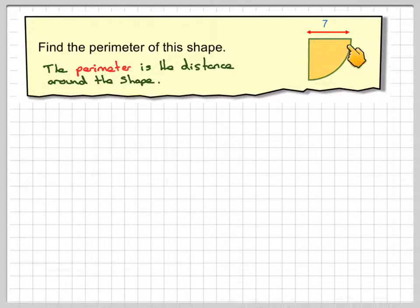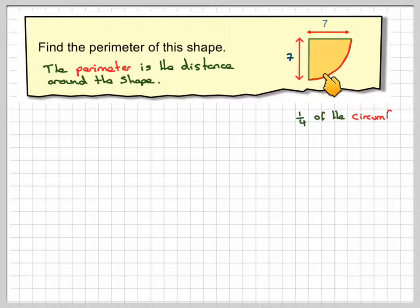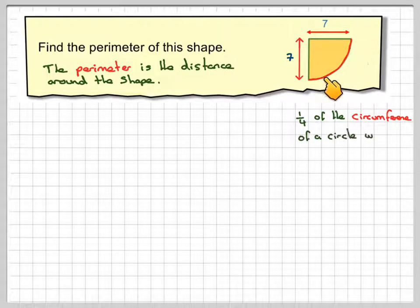So this is the radius of this quartered circle, then this here would also be seven. This bit here is part of the circumference of a circle. It's a quarter of a circumference of a circle with a radius of seven.